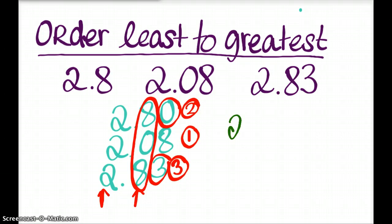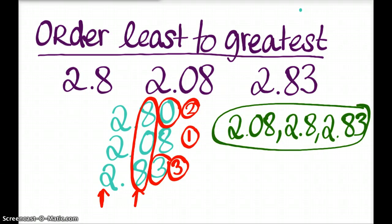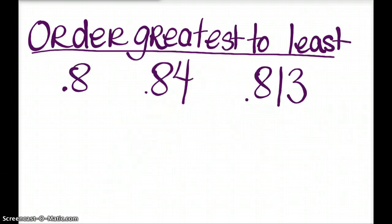So let's see — first, we had two and eight hundredths, followed by two and eight tenths, followed by two and 83 hundredths. So that is our answer. All right, let's try another one. This time we're going the other way. The biggest mistake people make is that they don't pay attention to the order they're supposed to use. So are you supposed to go least to greatest or greatest to least? Greatest to least.